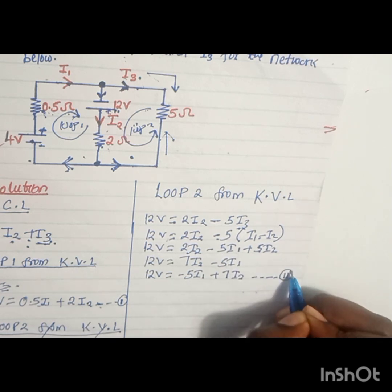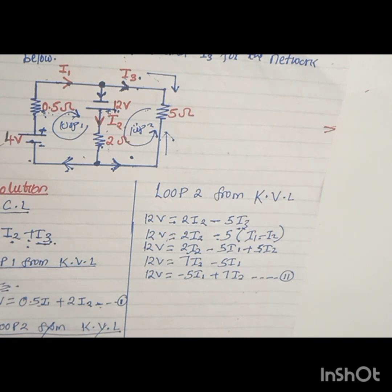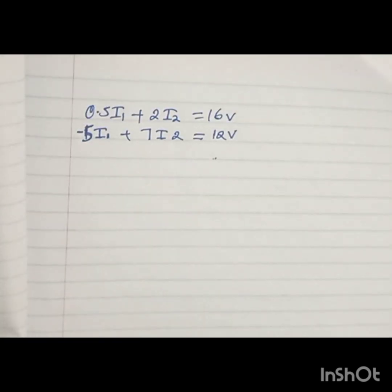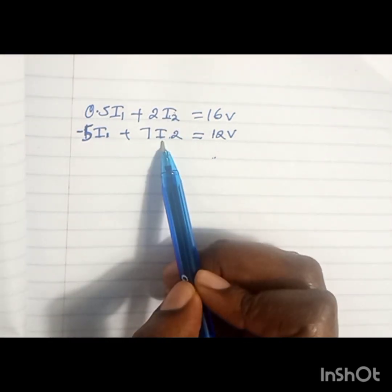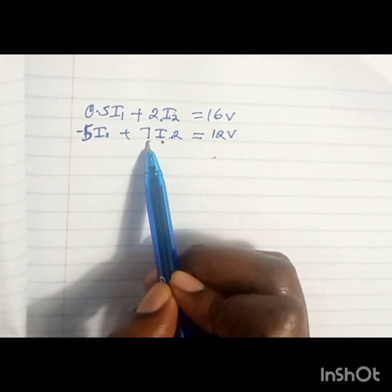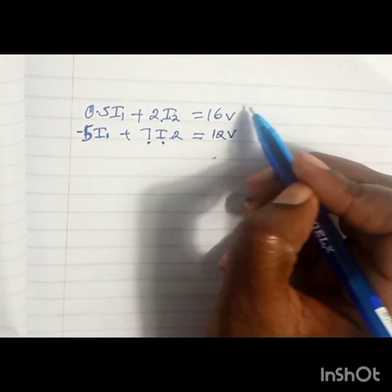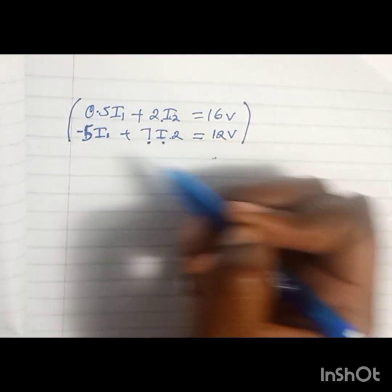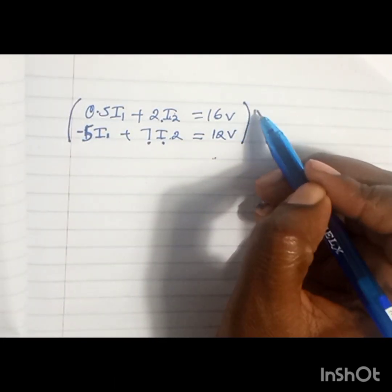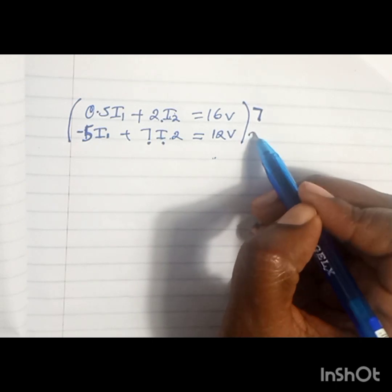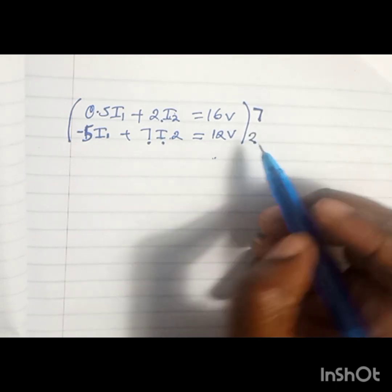So we have formed two simultaneous equations, and we're going to solve them simultaneously. In this case, I can use the elimination method so I can eliminate I2. I have to ensure that the coefficients of I2 are the same. In this case they are not the same, so I'll pick the first equation and multiply by 7, and the second equation by 2.